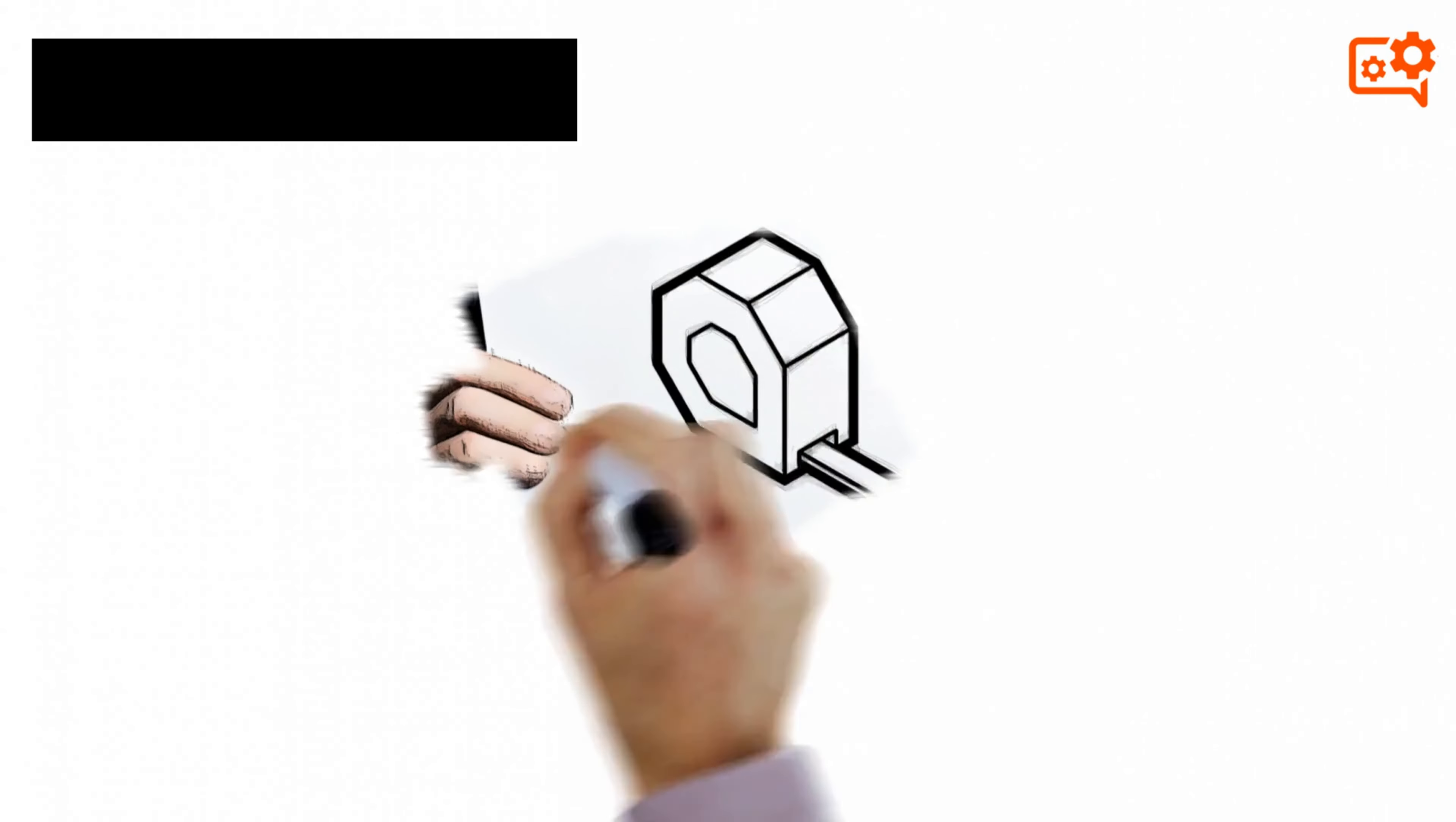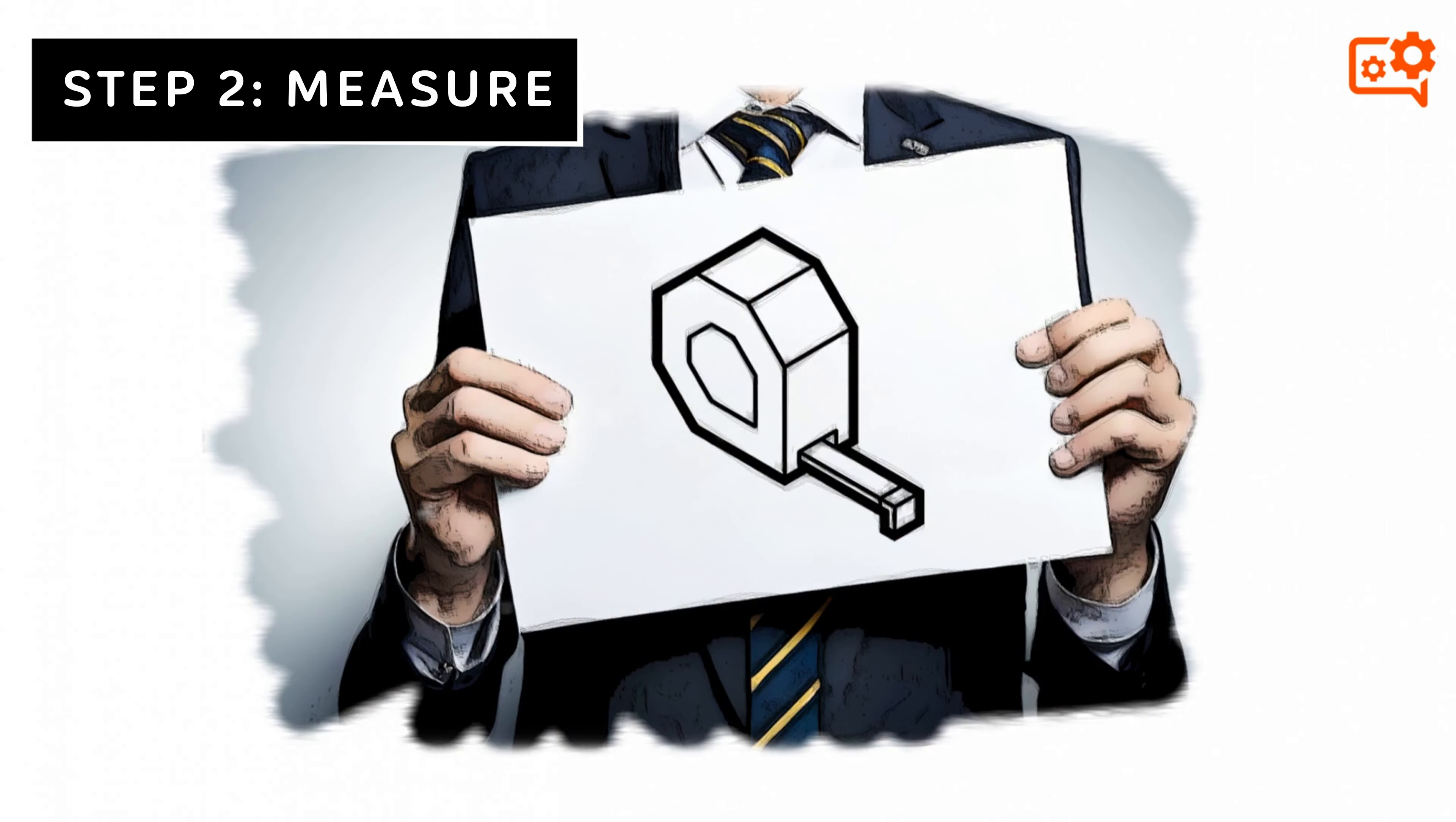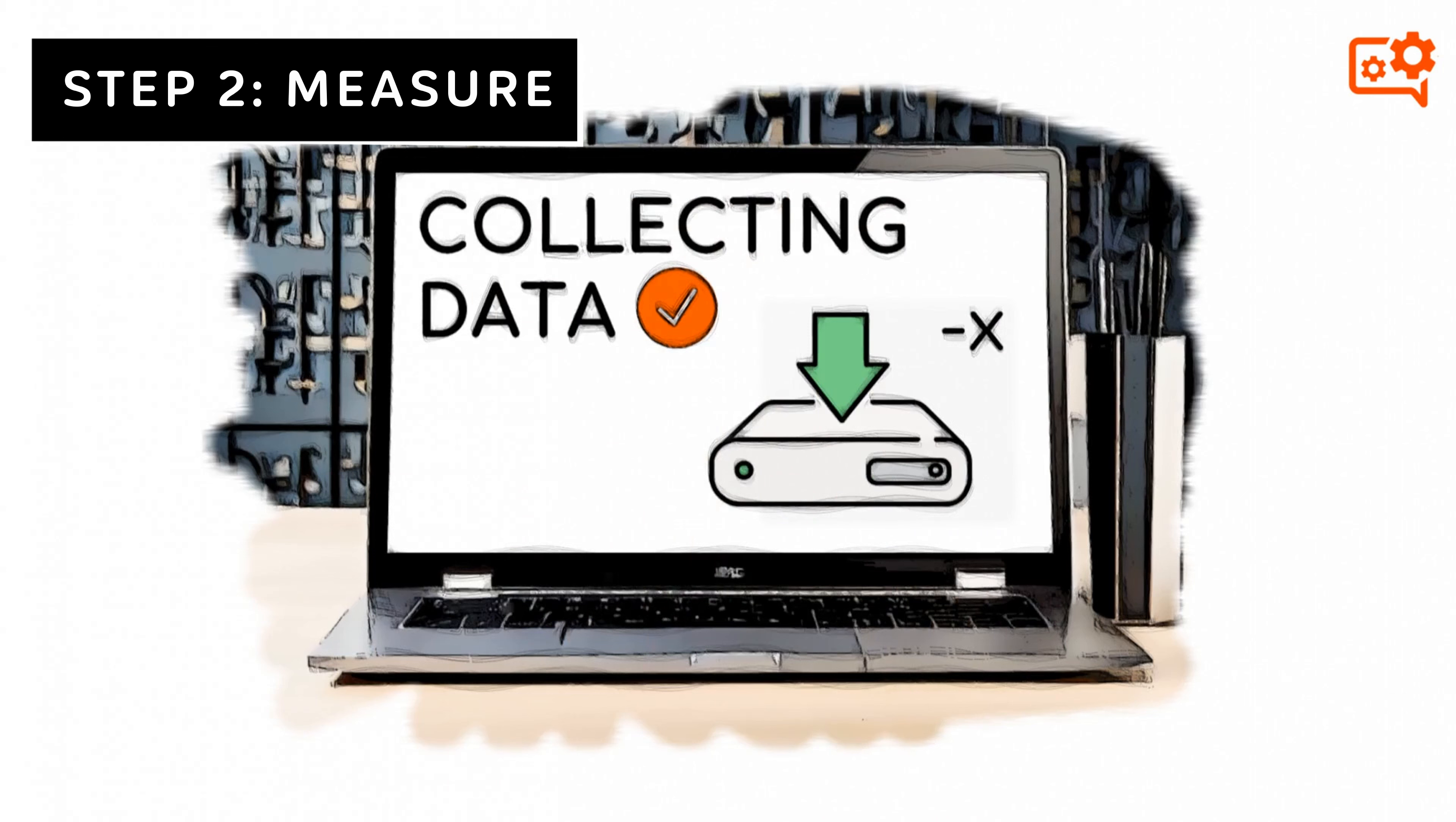Next, there's Measure. In this step, you'll need to gather data and measure the current state of your process or system. This could include collecting data on cycle times, defect rates, customer complaints, or any other relevant metrics.